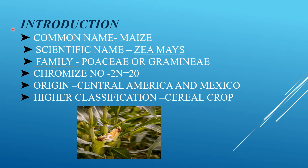First, we see the introduction. The common name is maize, and the scientific name is Zea mays. It belongs to the family Poaceae (Gramineae). The chromosome number is 2n equal to 20. Maize originated mainly in Central America and Mexico, and its classification is a cereal crop.